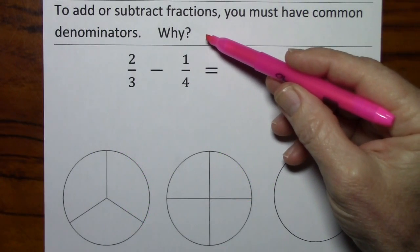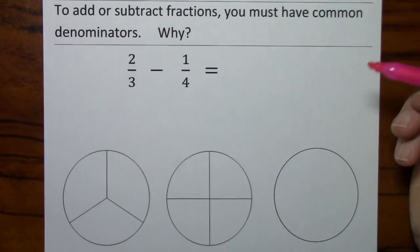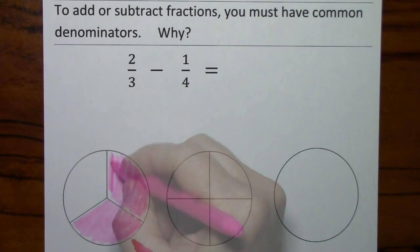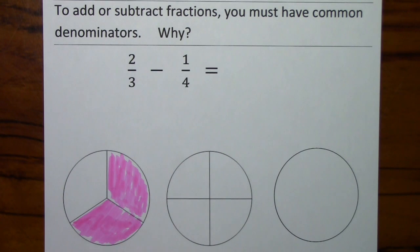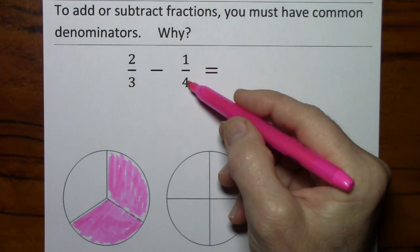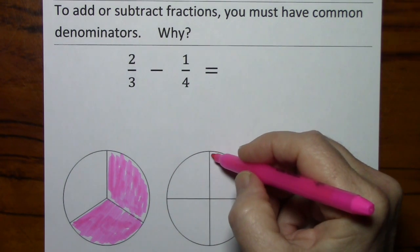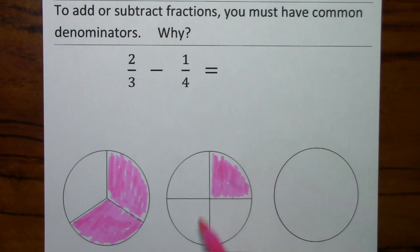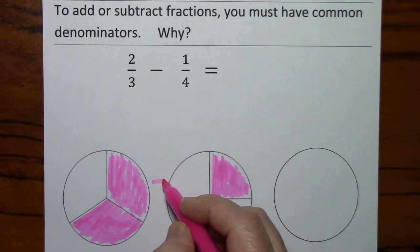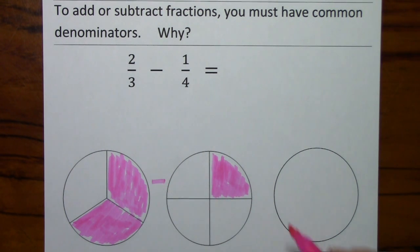So again, to help illustrate why we need common denominators, I'll represent 2 thirds by shading in 2 of the 3 slices. I'll represent 1 fourth by shading in 1 of the 4 slices. And if I tried to subtract 1 fourth from 2 thirds, it's not clear how much of this I should shade in. I don't know exactly how much is left.